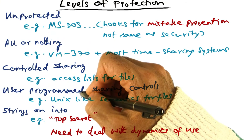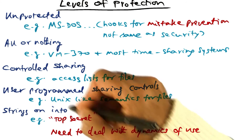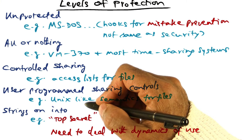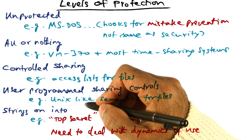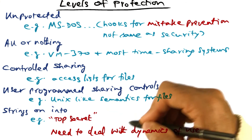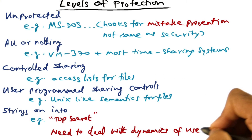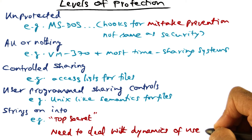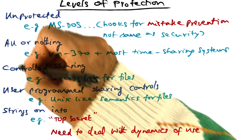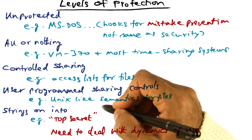These four levels of protection are not cast in concrete, because as the system evolves and as the user community evolves, you need to be able to deal with the dynamics of use of this information and use of the system. That is another issue which can be called a cross-cutting issue with respect to these levels of protection.